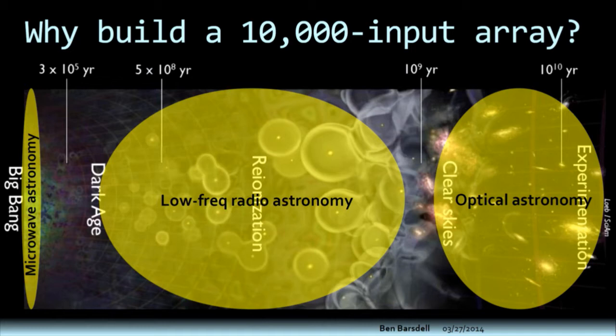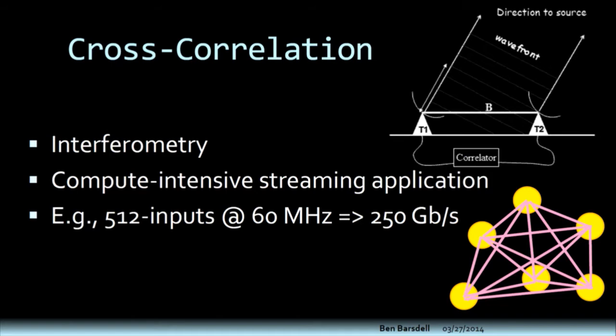The reason we might want to build a 10,000 input radio astronomy array is because low frequency radio astronomy can actually pick up a signal from this middle region between the Dark Ages and the epoch of re-ionization, and this could open a big window into an era of cosmology that we've never looked at before. The only way to actually make images of this region is to have something that's at least of order 10,000 inputs in scale.